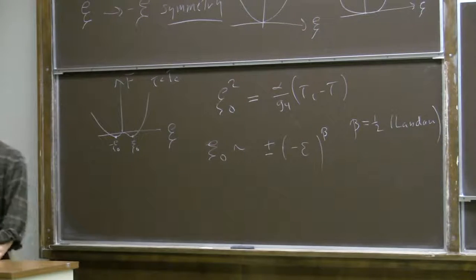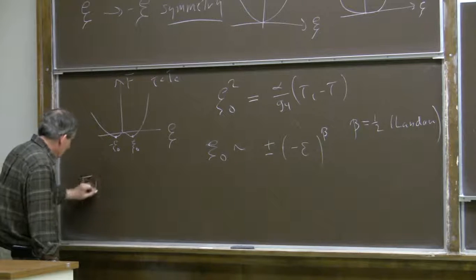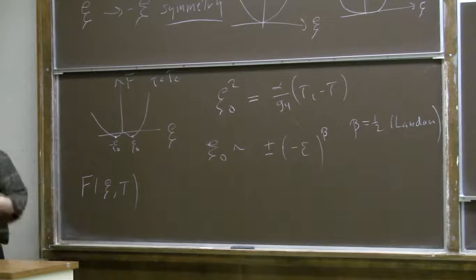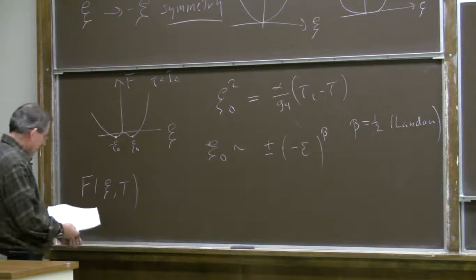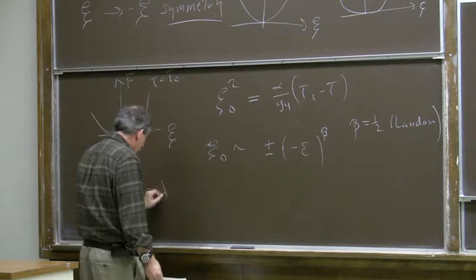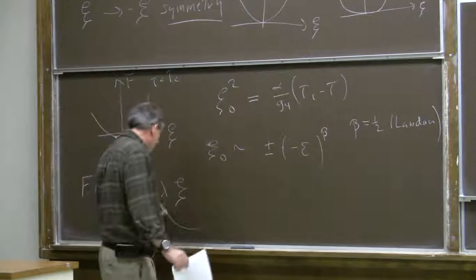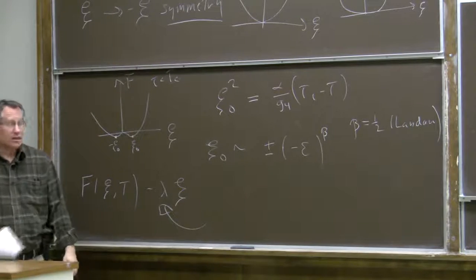We can also consider the response when we introduce some external field that couples to the order parameter. Consider modifying the Helmholtz free energy by introducing terms that break the symmetry due to some external field, like the magnetic field in the ferromagnetic model. The leading behavior will then be linear in the order parameter with some coefficient, which you can think of as the applied field in the magnetic model.